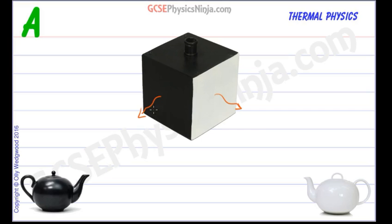This is the black surface. So we would fill up Leslie's Cube with some hot water, maybe boiling water, taking care of course. Then we would place two thermometers at the same distance away from both the black face and the white face.